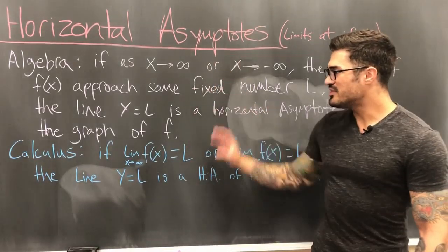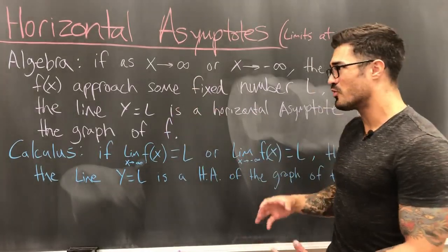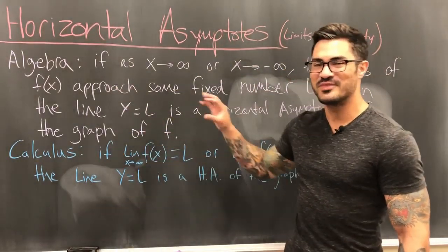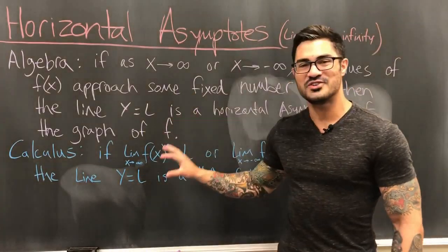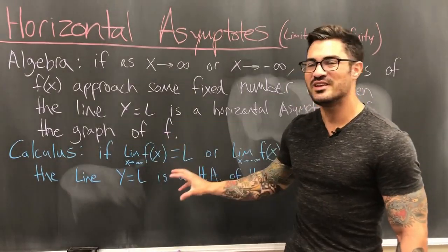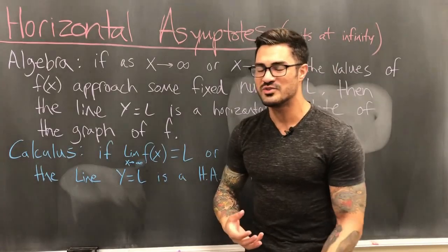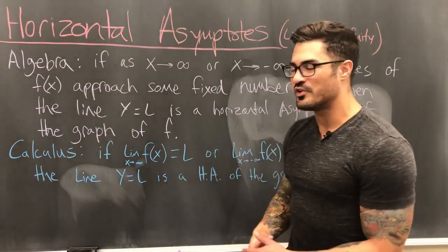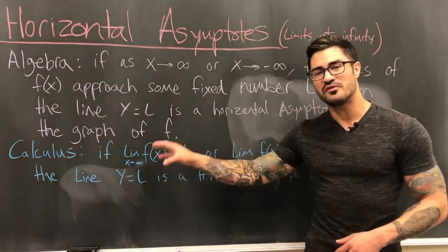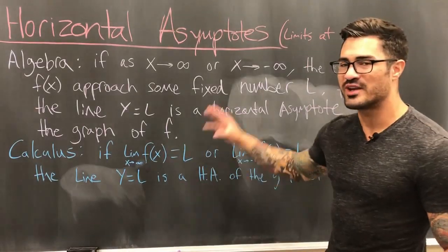This is important for two reasons: if you're in algebra, you can feel good knowing you already know some calculus. And if you're in calculus, you can remember that finding the limit of a function as x goes to infinity is just finding horizontal asymptotes — something you already know how to do using our tricks. There's no need to panic; you're just looking at end behavior.